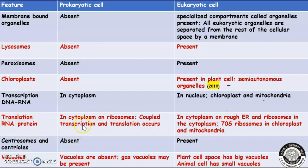In prokaryotic cells, translation occurs on ribosomes in the cytoplasm. Since prokaryotes lack introns, they don't have to do any RNA editing, so coupled transcription and translation — both processes occurring simultaneously — is possible. In eukaryotic cells, transcription occurs in the nucleus for the nuclear genome, and translation occurs in the cytoplasm on rough endoplasmic reticulum ribosomes or on free ribosomes in the cytoplasm, and on 70S ribosomes in chloroplasts and mitochondria.